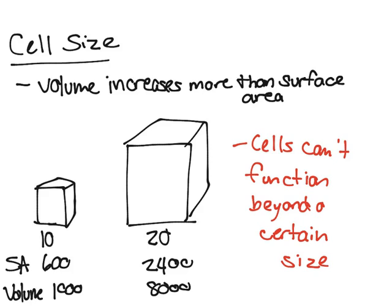What you need to take from this video is that there are limits on cell size. As a cell grows or gets bigger, the volume increases more than the surface area. If it helps you to remember, the surface area of a cell is proportional to the square of its diameter, while the volume is proportional to the cube of its diameter.